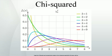Characteristics. Further properties of the chi-squared distribution can be found in the box at the upper right corner of this article. Probability density function. The probability density function of the chi-squared distribution is where Γ denotes the gamma function, which has closed form values for integer k. For derivations of the pdf in the cases of 1, 2 and k degrees of freedom, see proofs related to chi-squared distribution.